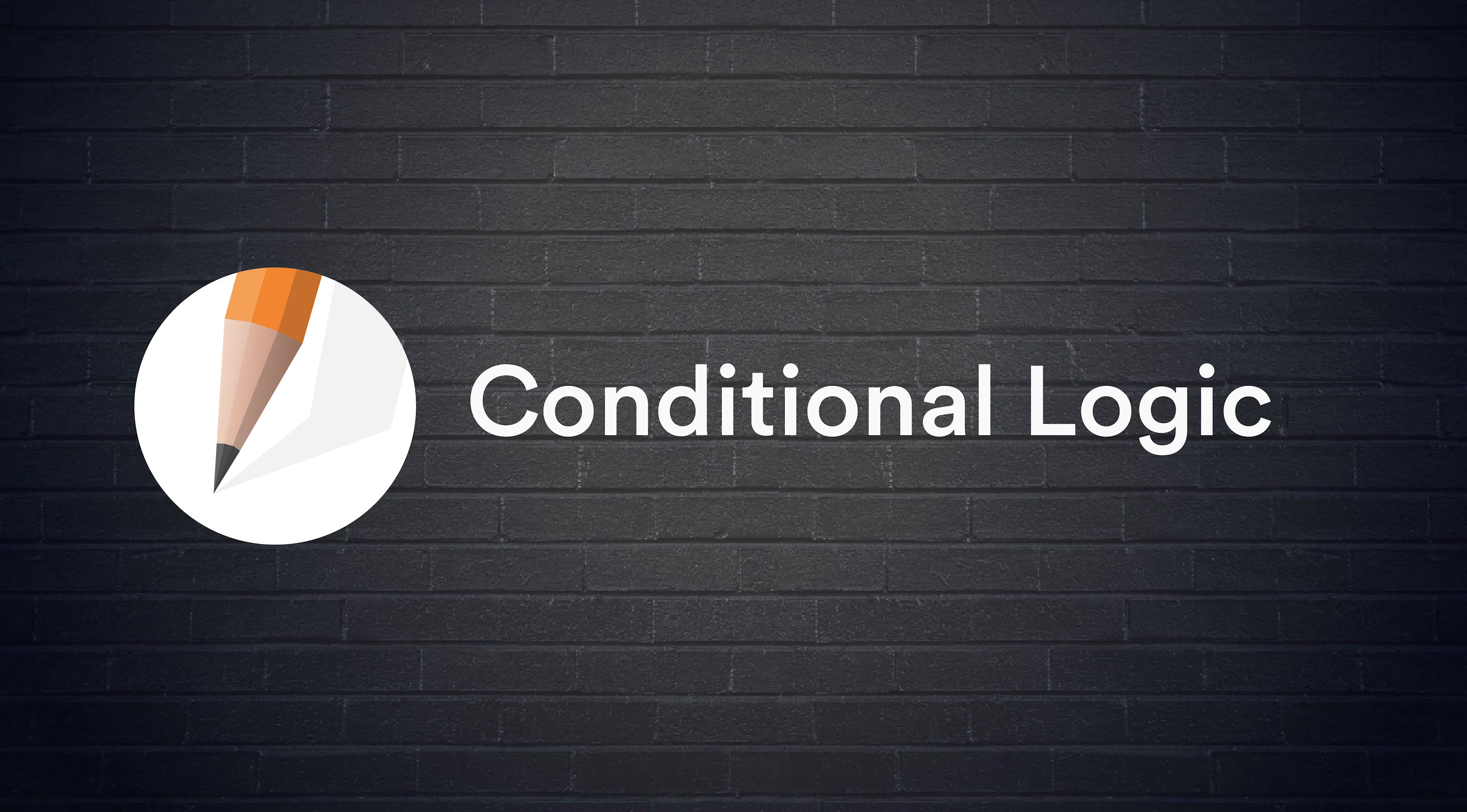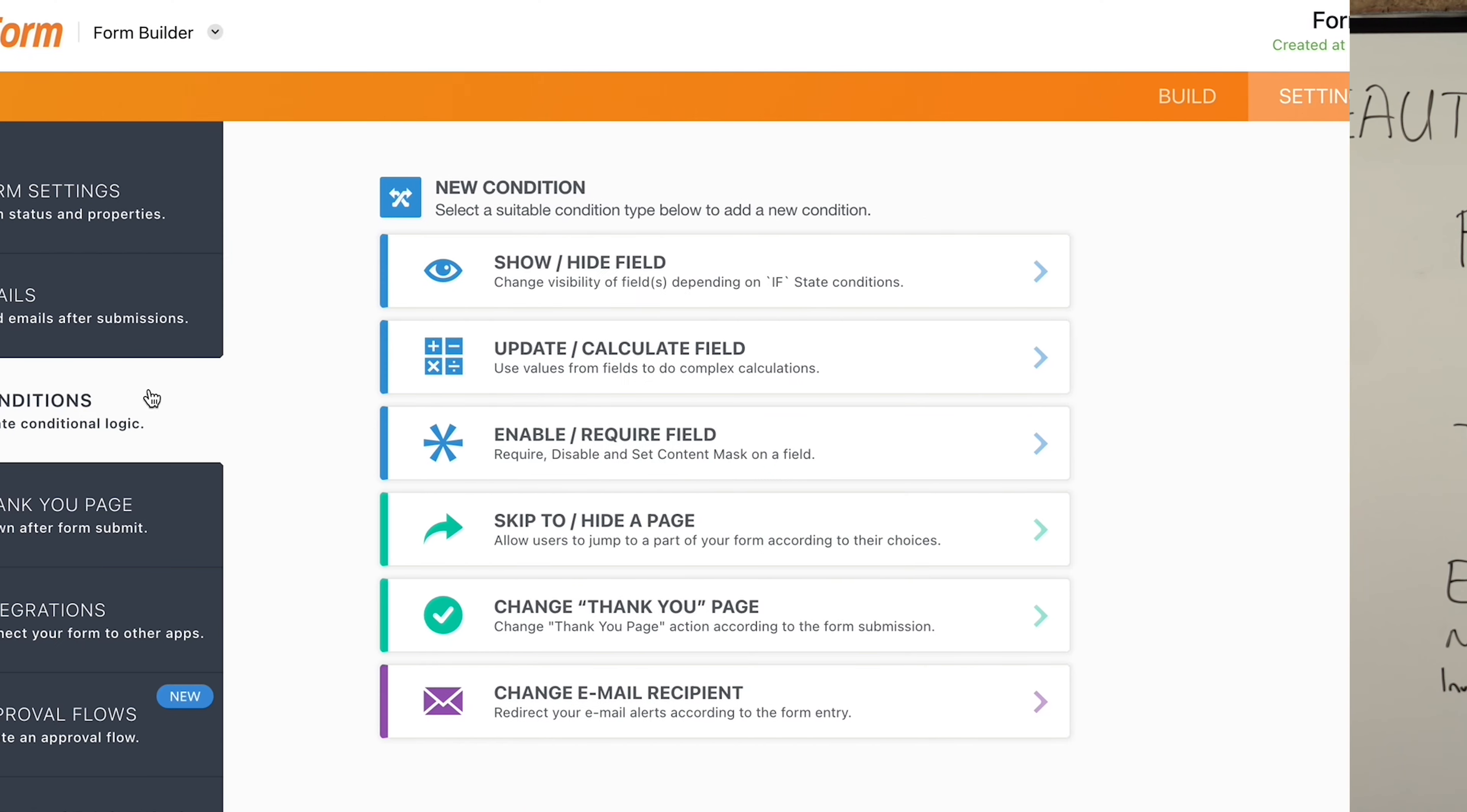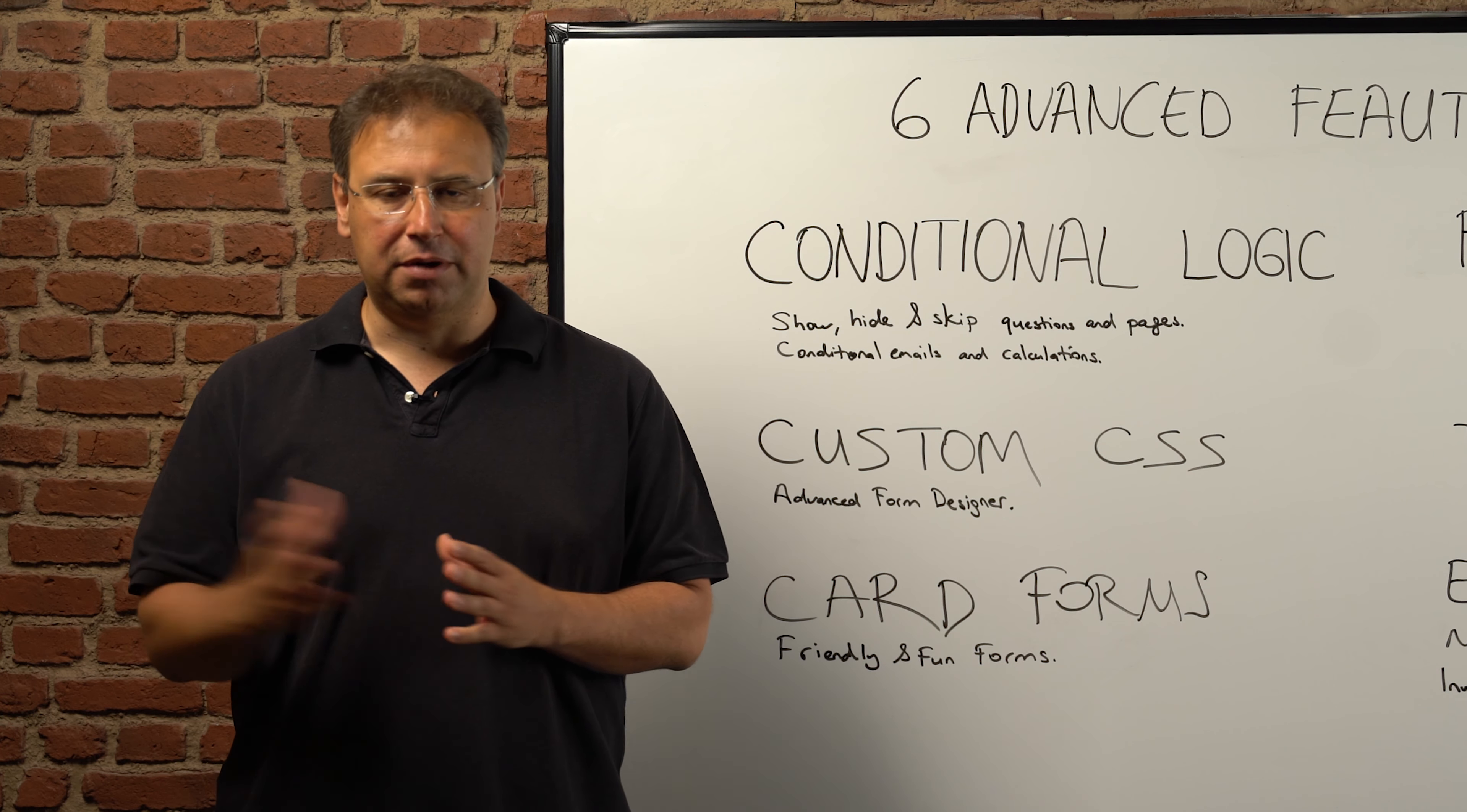The first one is conditional logic. Conditional logic is a JotForm feature that allows you to create smart forms. You can show or hide questions or pages depending on a previous form question. You can switch questions, add calculations, or hide irrelevant questions. You can also send emails to different people depending on different selections made on a form. Conditional logic makes your forms flexible and smart.